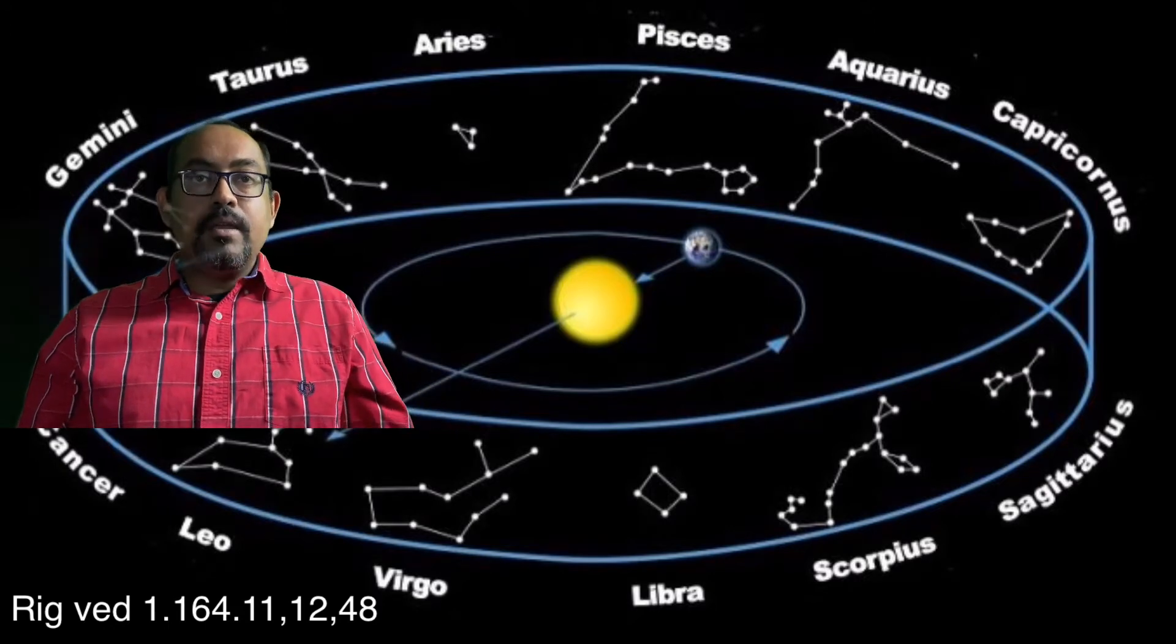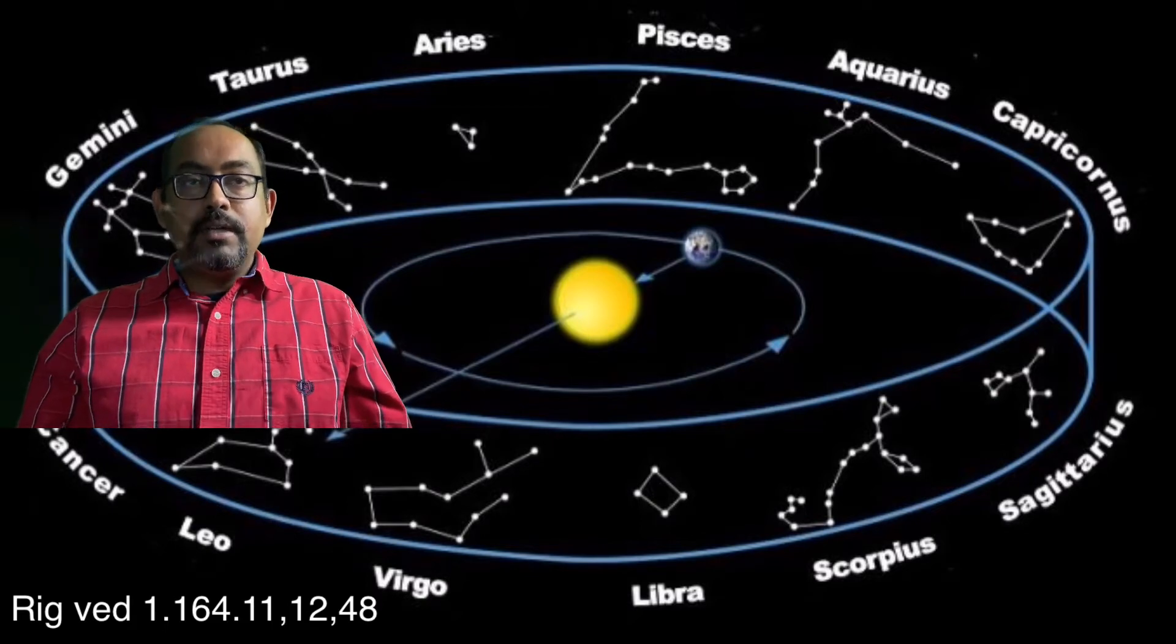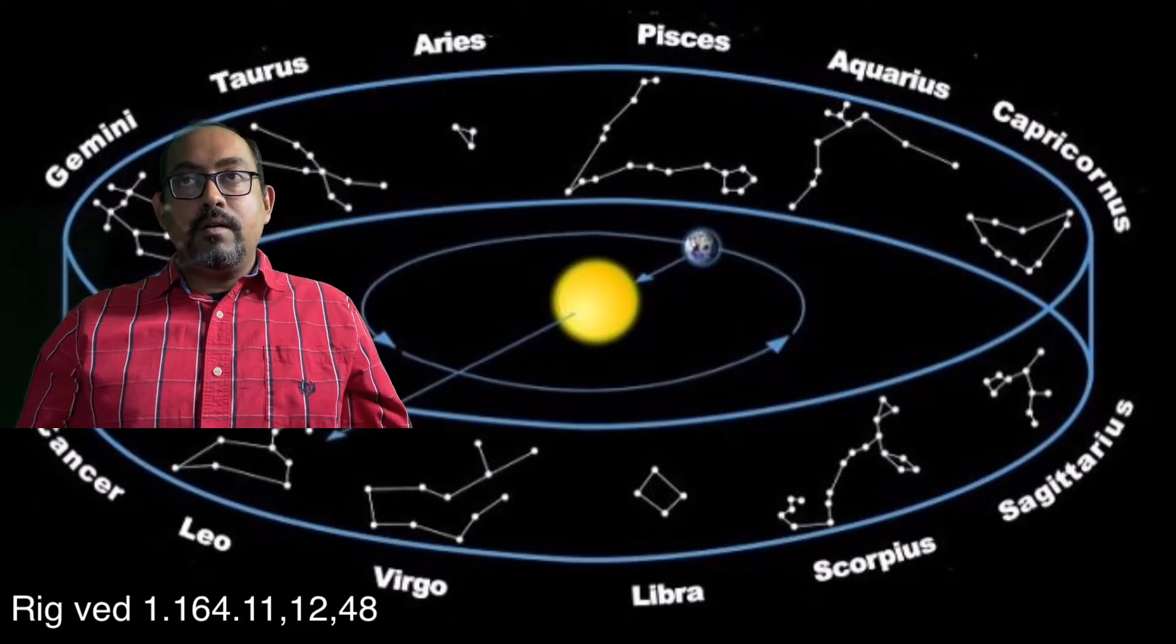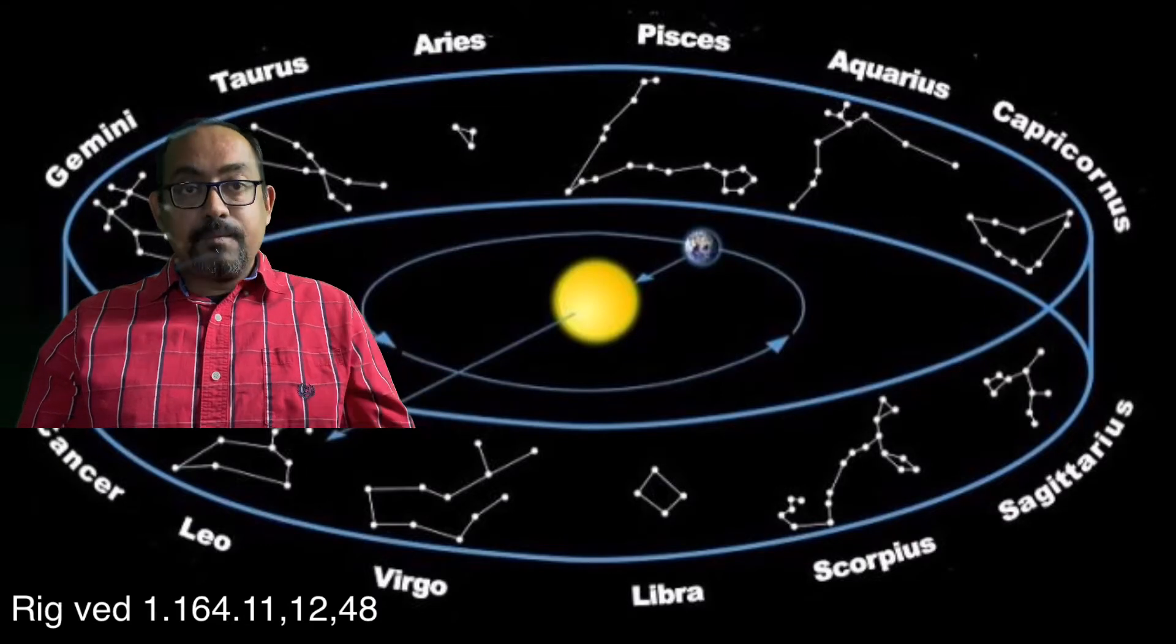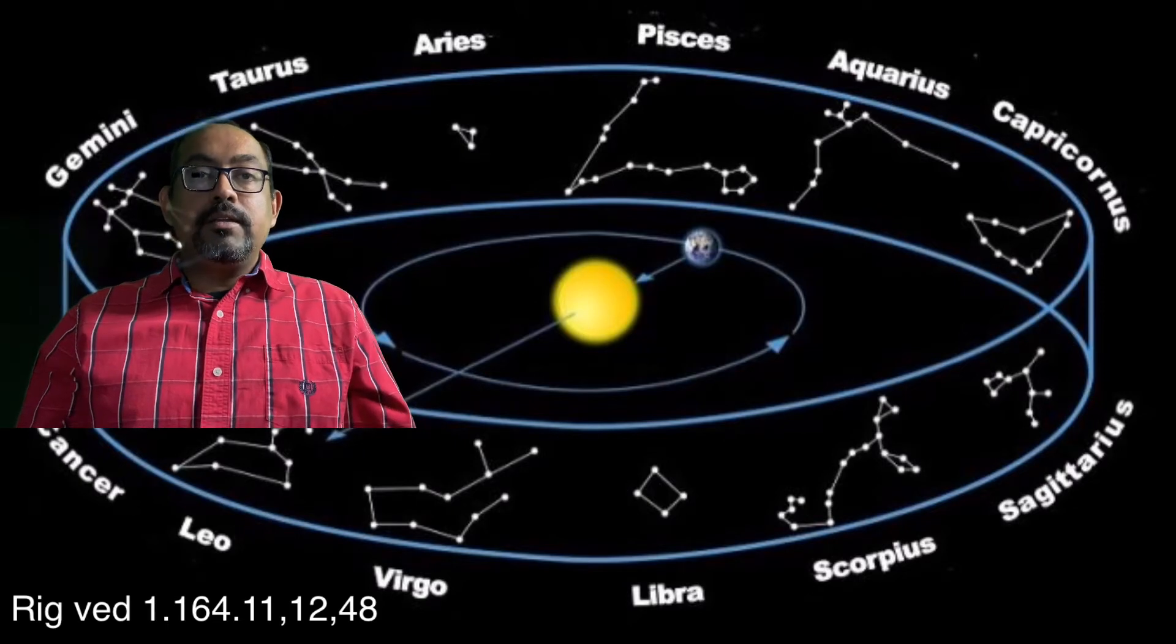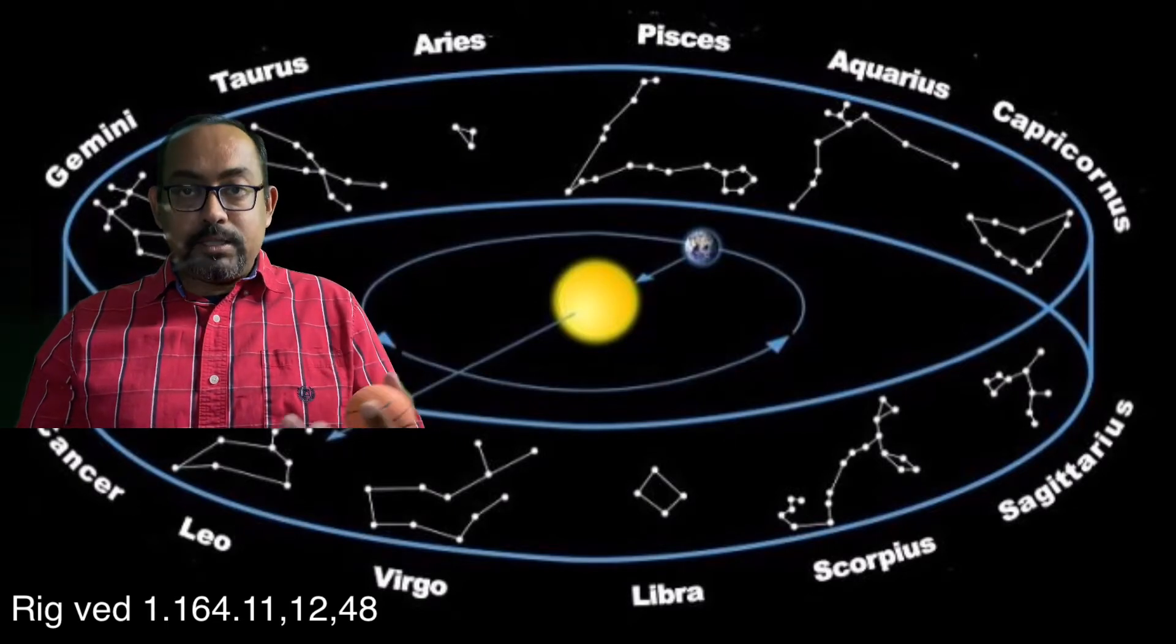Then you have putra which is sun, Agni O fire. Now Agni here is again referred to as sun in this mantra. Then you have mithunasha, so it is referring to pair, there are like two things, pair, it's a plural form in the Veda.